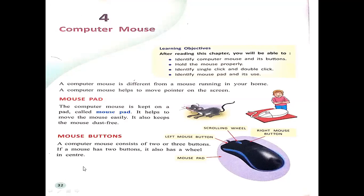A computer mouse consists of two or three buttons. If a mouse has two buttons, it also has a wheel in the center. Here we have a mouse with two buttons — one is the left mouse button and the other is the right mouse button. In the center, a scrolling wheel is also present. This mouse is placed on the pad.